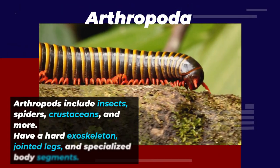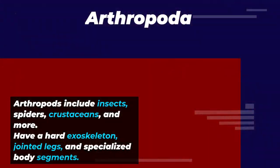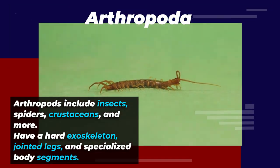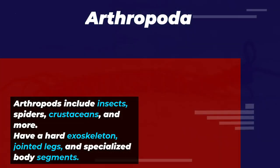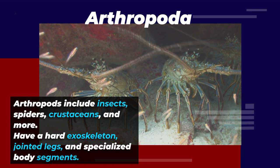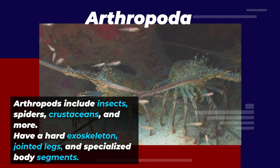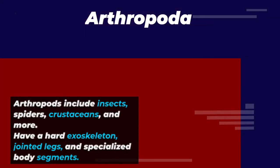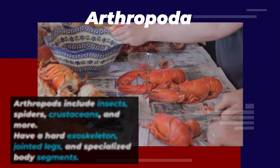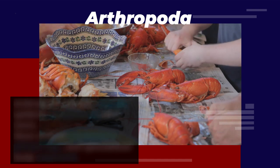Finally, the fifth phylum we'll be looking at is Arthropoda, which is the most diverse and successful animal group. Arthropods include insects, spiders, crustaceans, and more. They have a hard exoskeleton, jointed legs, and specialized body segments, as well as a complex nervous system, respiratory system, and circulatory system.